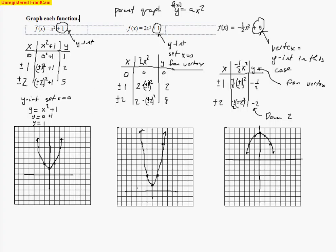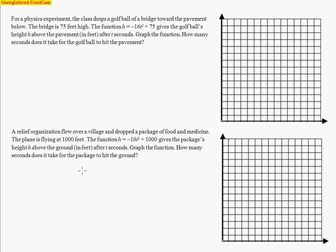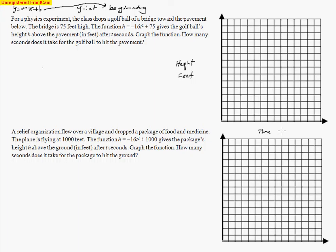Let's take a look at the last type of problem. In this physics experiment, a class drops a golf ball from a bridge toward the pavement below. The bridge is 75 feet high, and here's the equation. Notice how it starts at the y-intercept — that's the beginning point. Just like with linear equations where y equals mx plus b and b is the beginning point, our y-intercept is 75. So we're starting 75 feet above the ground. The vertical axis is height in feet and the horizontal axis is time in seconds.